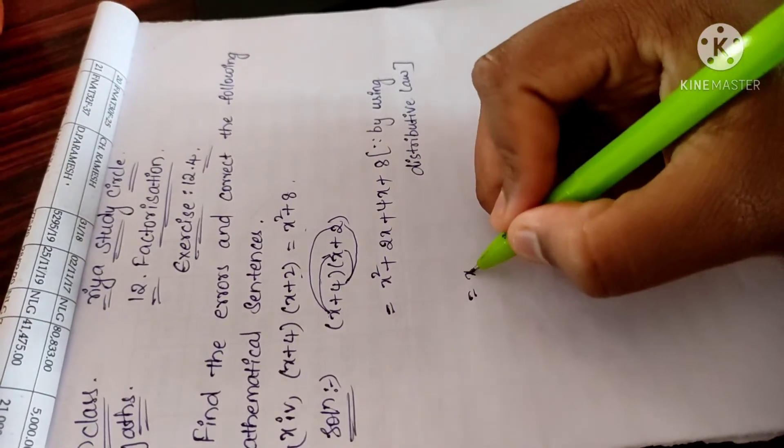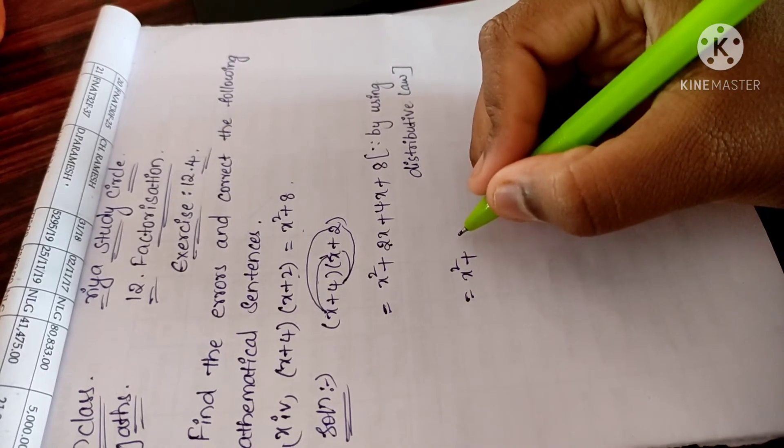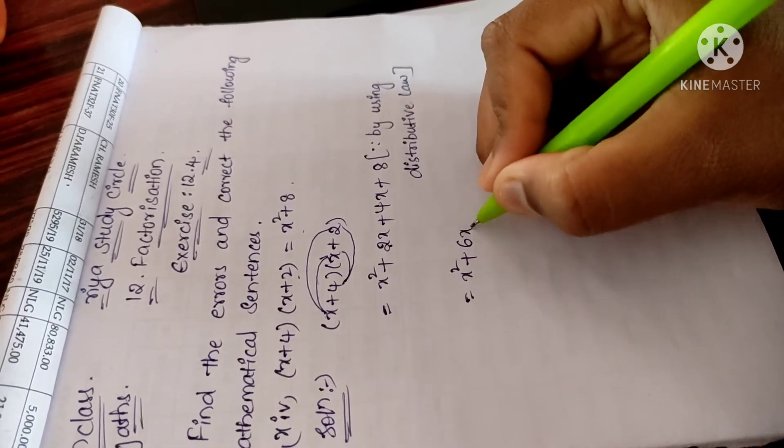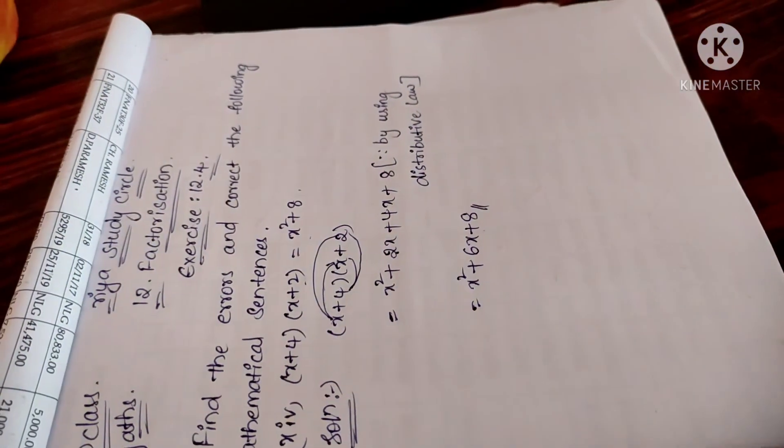So here, x square plus 2x plus 4x is 2 plus 4 is 6, 6x plus 8. So this is the solution for this problem.